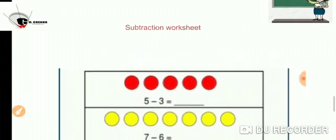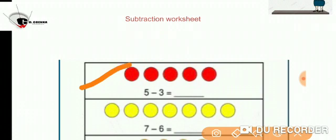Now let us solve this worksheet. 5 minus 3 is equal to - 5 is the bigger number, so we will keep it in our mind and 3 on our fingers. So 5 minus 3 is equal to: 5, 4, 3, 2. What did we do? We counted backwards. So 5 minus 3 is equal to 2.